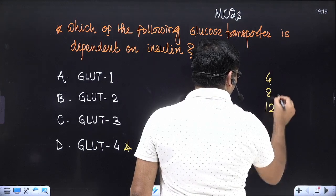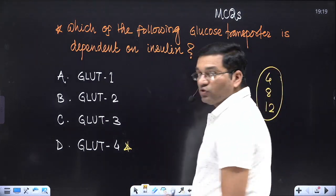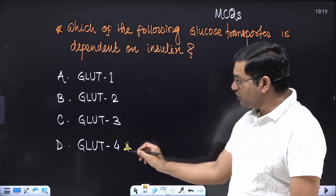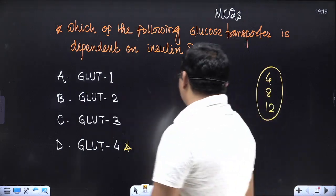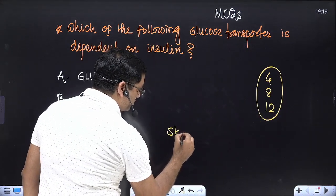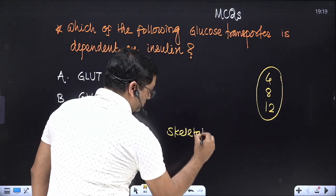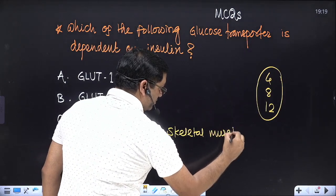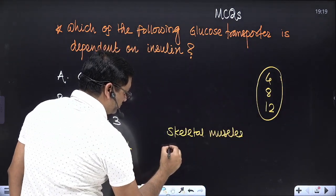GLUT-4, 8, and 12 - these are the insulin-dependent glucose transporters. What is the location of GLUT-4? It is present in skeletal muscle, then adipose tissues,